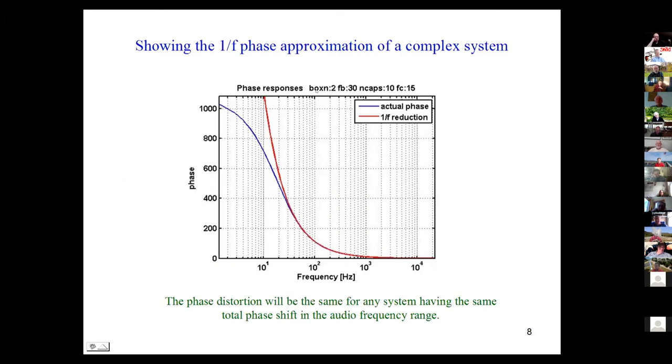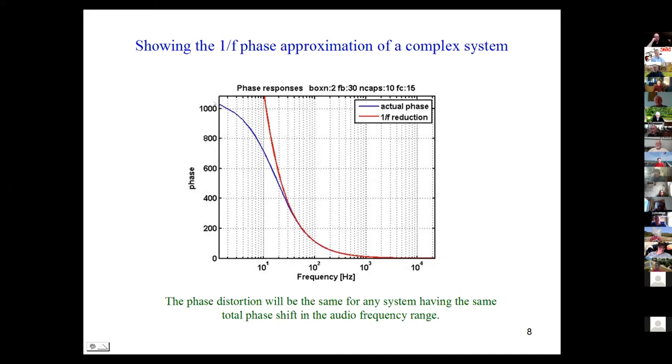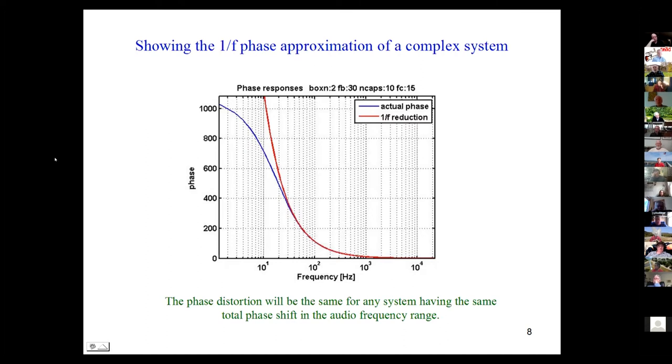At this point, I've taken a loudspeaker box with two orders of high-pass, a sealed box at 30 hertz, plus 10 capacitors at 15 hertz. This is the actual phase of that situation. The 1 over f reduction is very close to being the same as that actual thing. The phase is really determined by all of those capacitors.